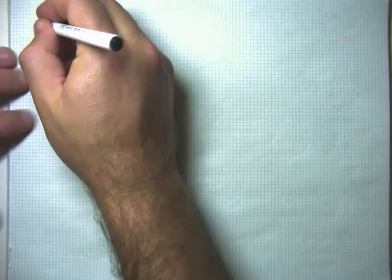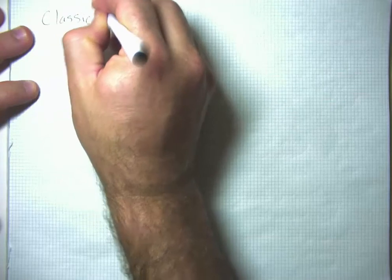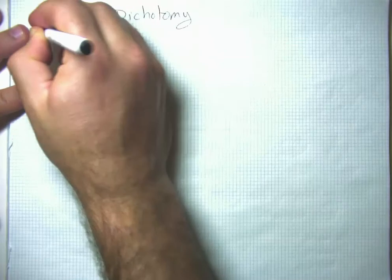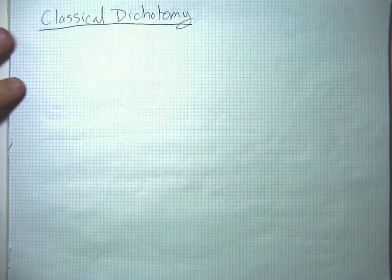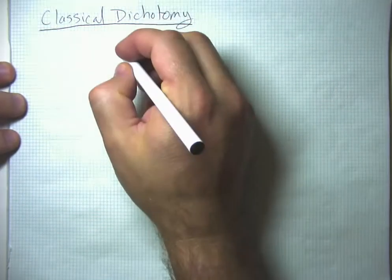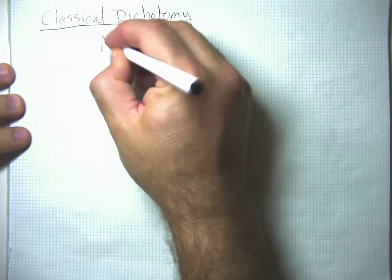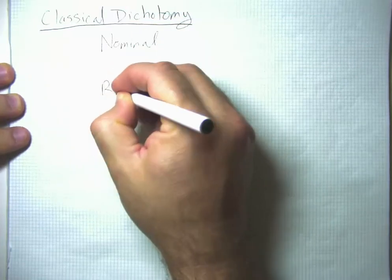In this video, I'm going to talk about something that we've been dancing around, and that's the issue of what we call the classical dichotomy. A dichotomy is when things are split into two opposing or totally separate categories — good and evil, black and white, and so on. The classical dichotomy says that all economic variables are either nominal or real.